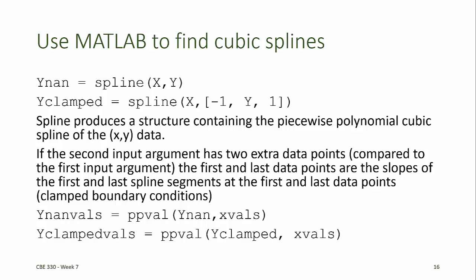The spline function can also calculate cubic splines that have clamped boundary conditions by adding two additional data points to the y input argument. If the y input argument has two more data points than the x input argument, then the first and last data points of y will be used as the slopes for the first and last spline segments at the first and last data points, thereby imposing the clamped boundary conditions.